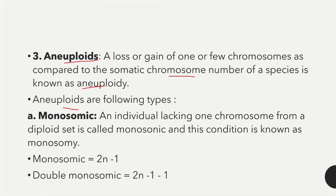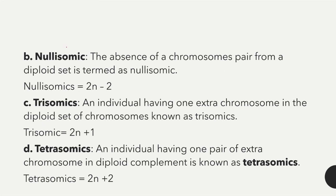The first type of aneuploidy is monosomic — a condition where one chromosome is absent, expressed as 2n minus 1. Double monosomic means 2n minus 1 minus 1. The second type is nullisomic — the absence of a chromosome pair from a diploid set, expressed as 2n minus 2.